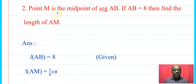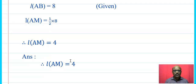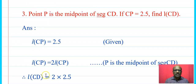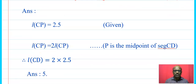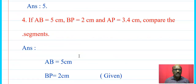Question 2: Point M is the midpoint of segment AB. If AB = 8, find length AM. Since M is the midpoint, AM = (1/2) × AB = (1/2) × 8 = 4. Hence AM = 4. Next question: Point P is the midpoint of segment CD. CP = 2.5, find length CD. Since P is the midpoint, CD = 2 × CP = 2 × 2.5 = 5.